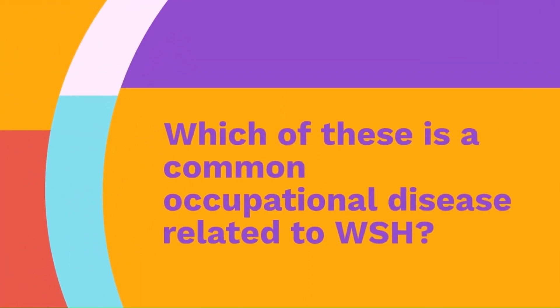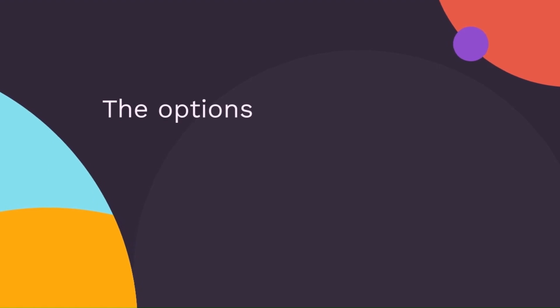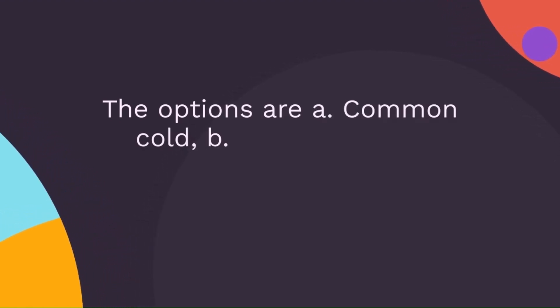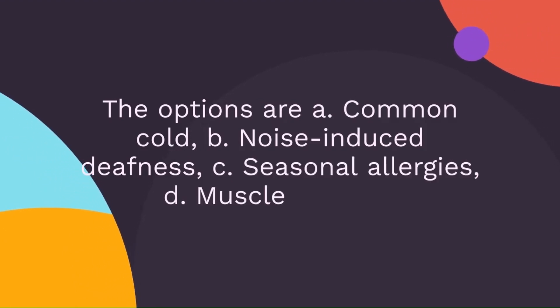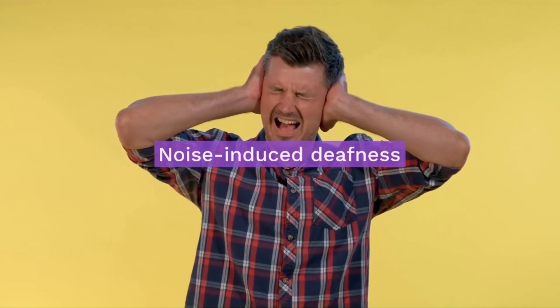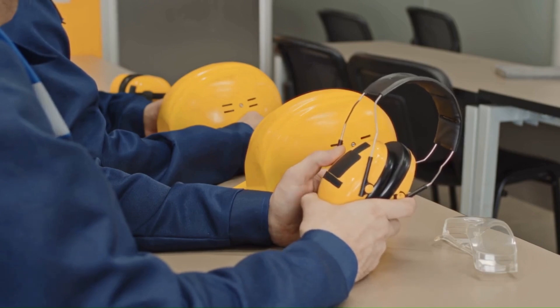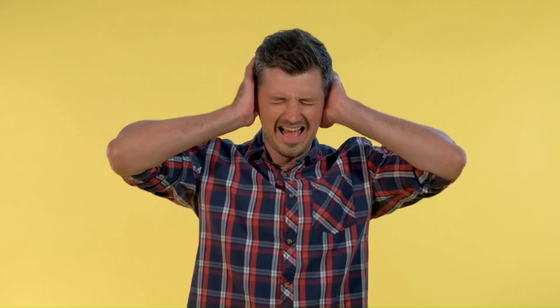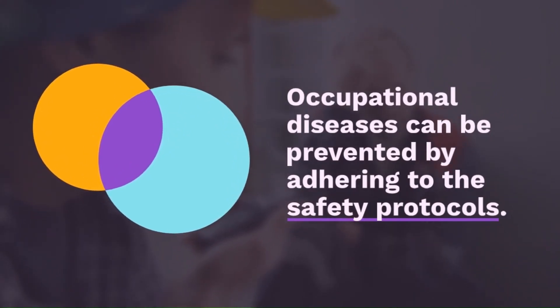Question 10: Which of these is a common occupational disease related to WSH? The options are: A — common cold, B — noise-induced deafness, C — seasonal allergies, or D — muscle cramps. The correct answer is noise-induced deafness. Noise-induced deafness happens when you are around loud noises for too long without any protection, similar to how your ears might feel at a loud concert. Occupational diseases can be prevented by adhering to safety protocols.